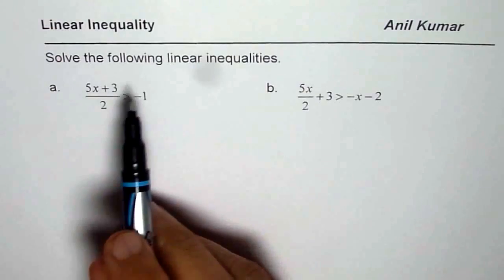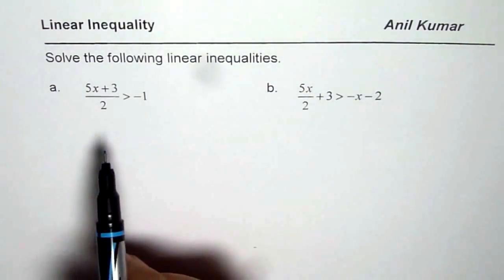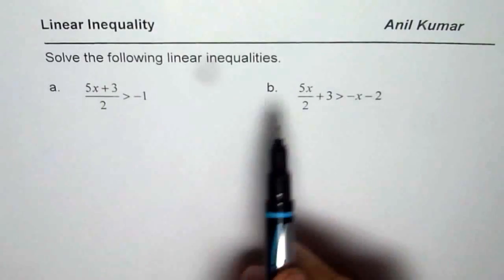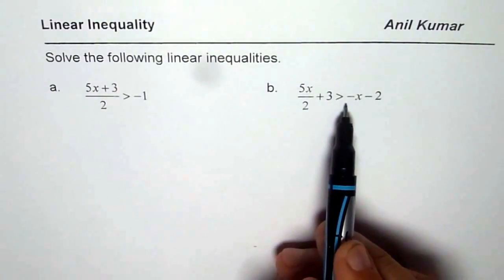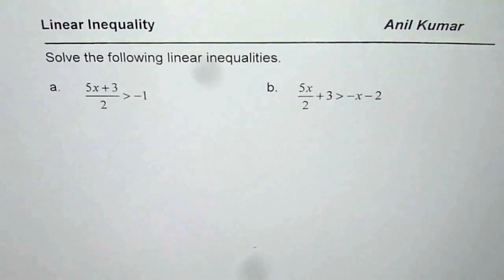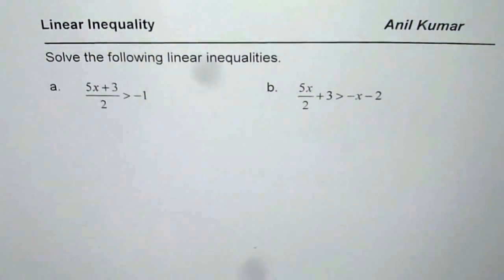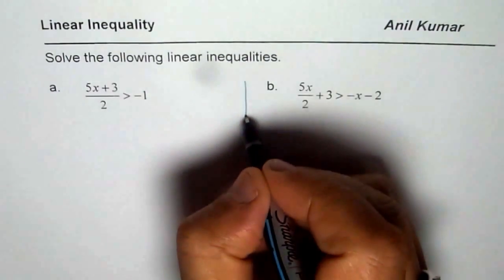Question is, solve the following linear inequalities: 5x plus 3 divided by 2 is greater than minus 1, and 5x over 2 plus 3 greater than minus x minus 2. So I have taken these questions from the assignment of my student. You can copy, solve, and then look into my suggestions. So let's do them one by one.